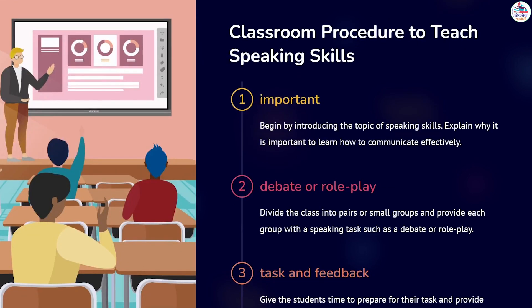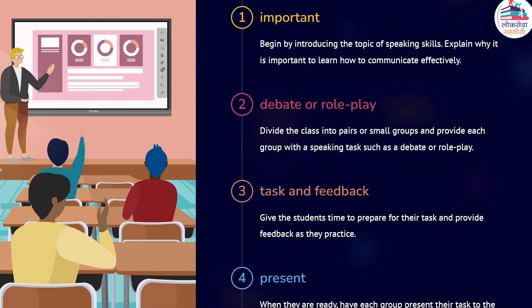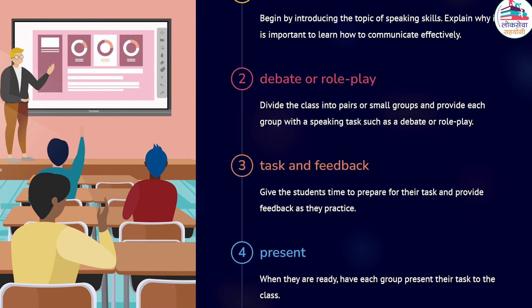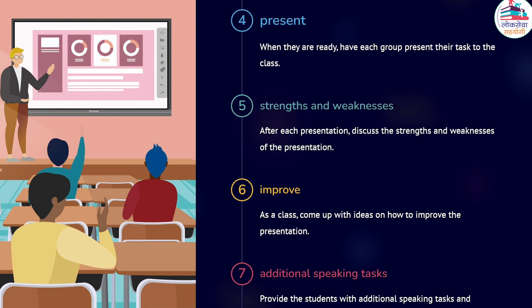Here is the classroom procedure for teaching speaking skills. Step 1: Begin by introducing the topic and explaining why effective communication is important. Step 2: Divide the class into pairs or small groups and provide a speaking task such as a debate or role-play. Step 3: Give students time to prepare and provide feedback as they practice. Step 4: Have each group present their task to the class. Step 5: After each presentation, discuss its strengths and weaknesses.